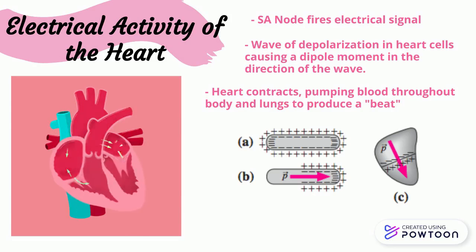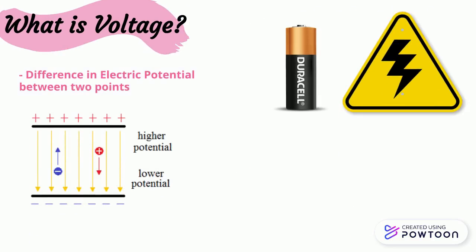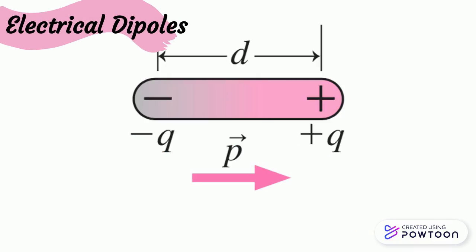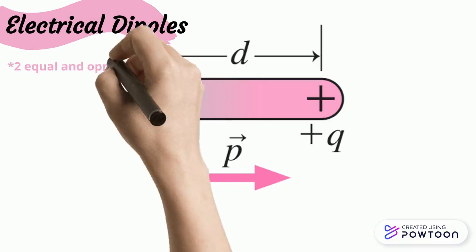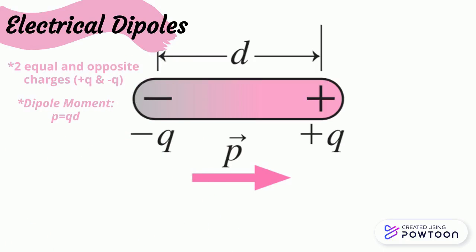The general direction of the heart's overall dipole moment is shown in figure C. Voltage is the electric potential difference between two points, further defined as the work needed per unit charge to move a test charge between two points. A voltage is created across the cell membrane of the heart through chemistry. Electric dipoles are at the root of the electrical properties of the heart. Dipoles involve two equal and opposite charges at a distance d apart. The dipole moment, P, is the magnitude of the charge times their distance. P is a vector quantity, meaning it has both direction and magnitude, but the direction in dipoles is always pointing negative to positive. More on this can be found in Chapter 20 of the Wolfson Textbook.